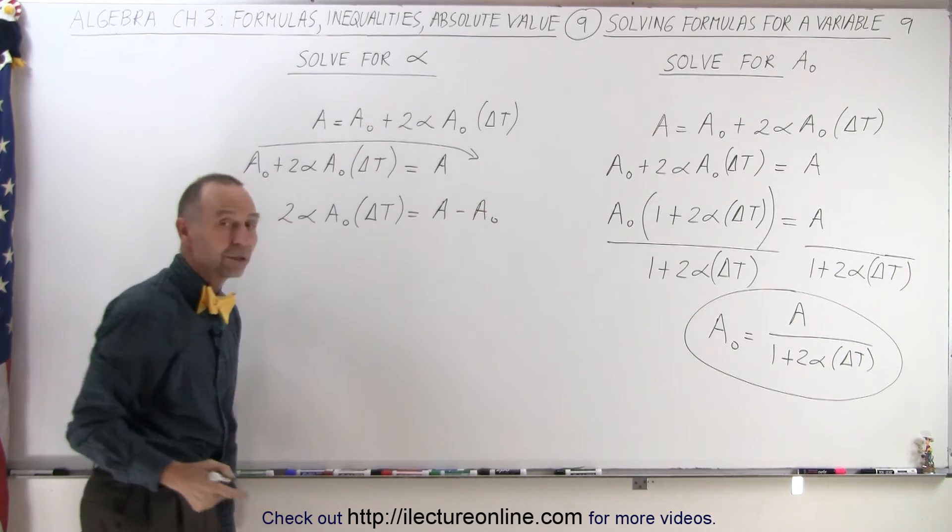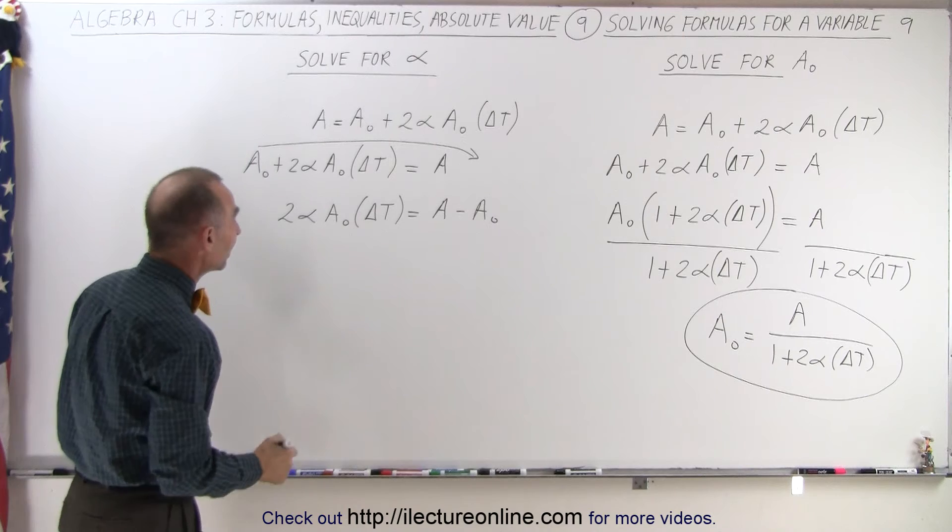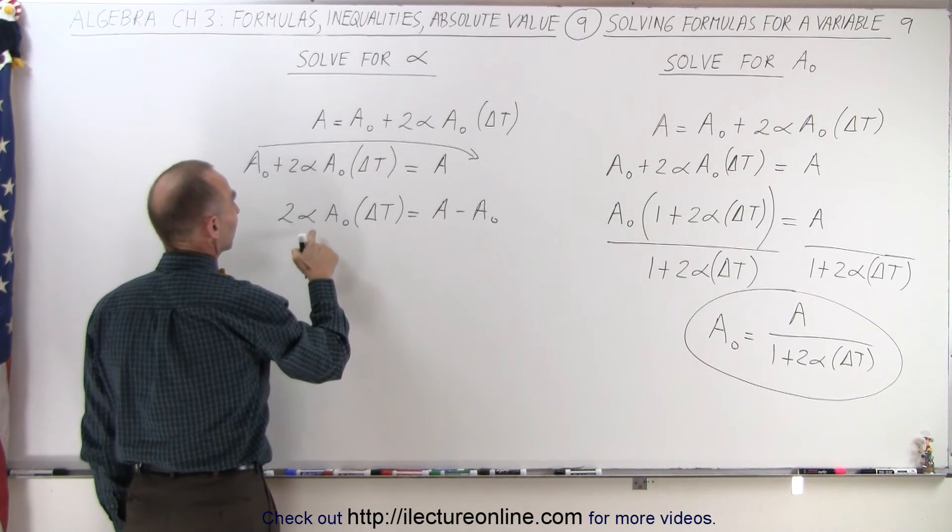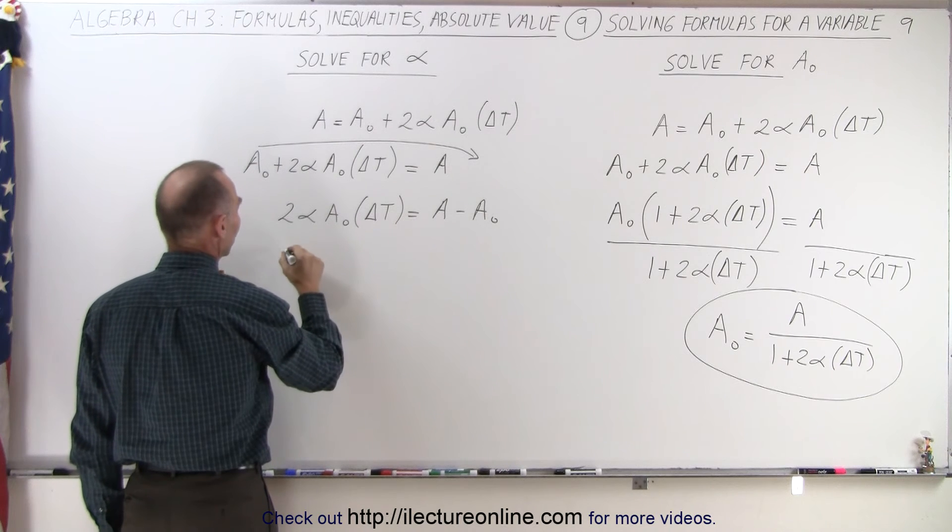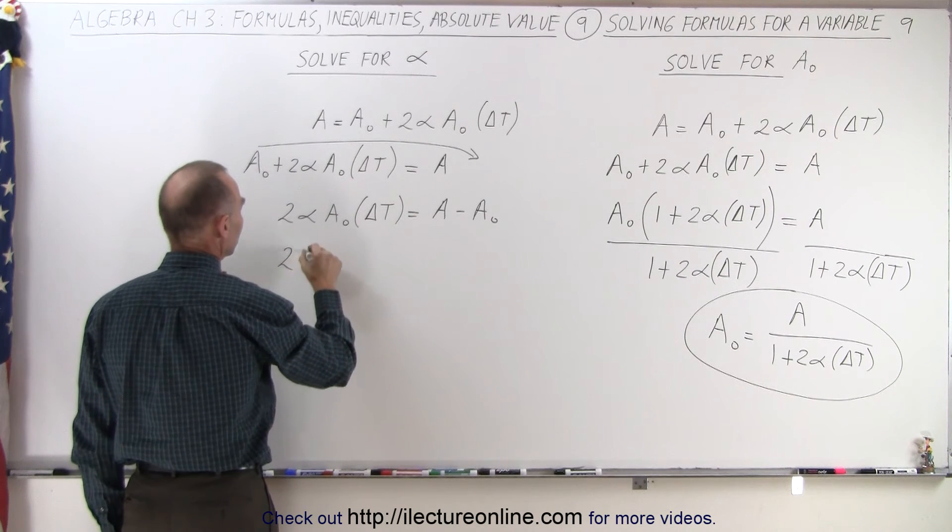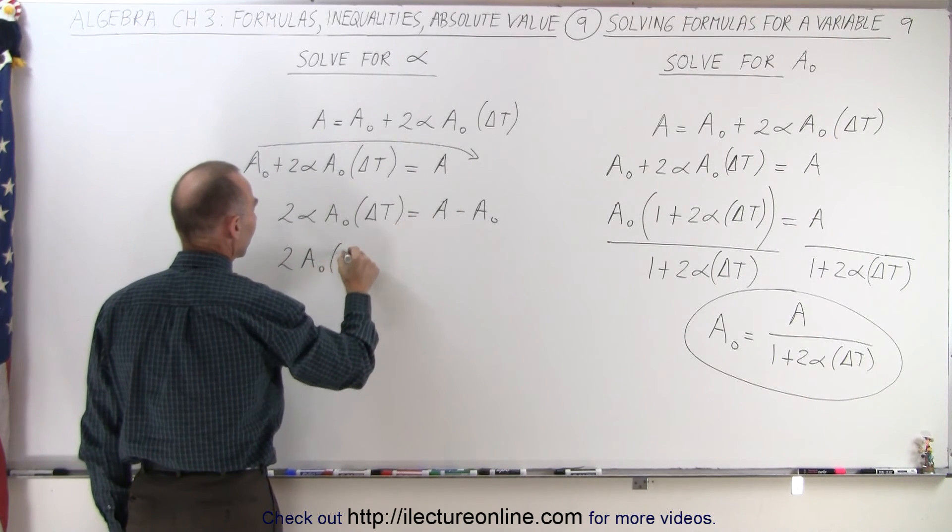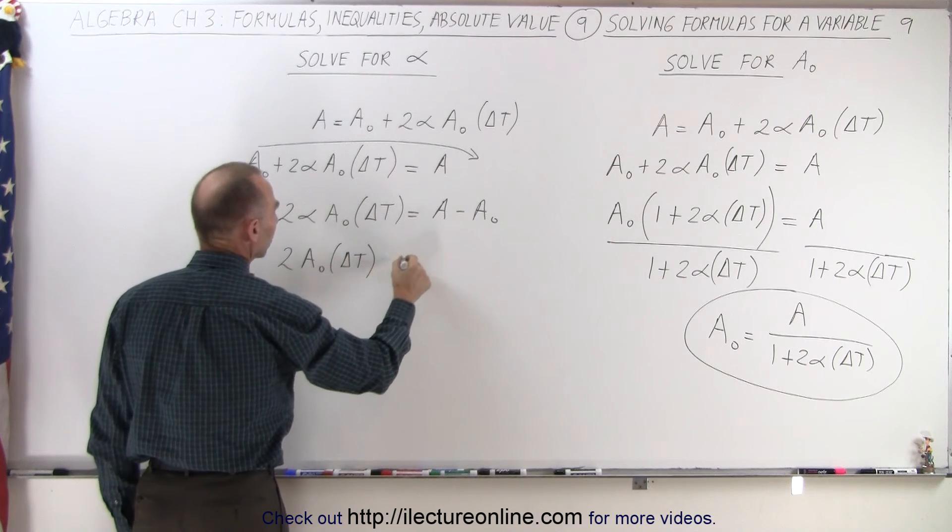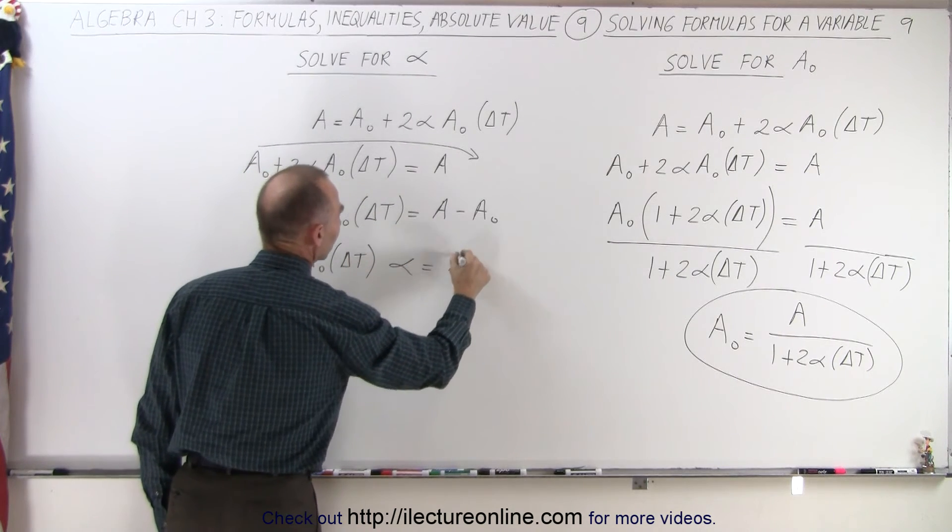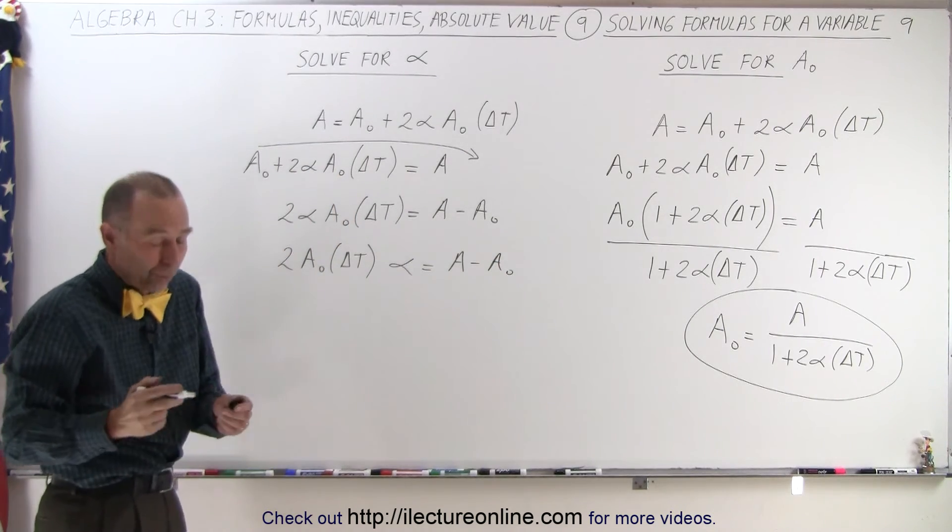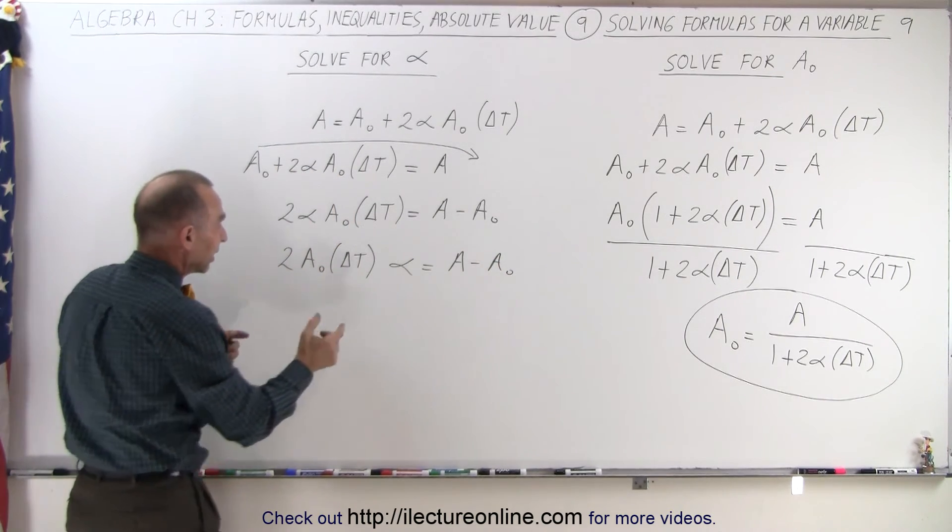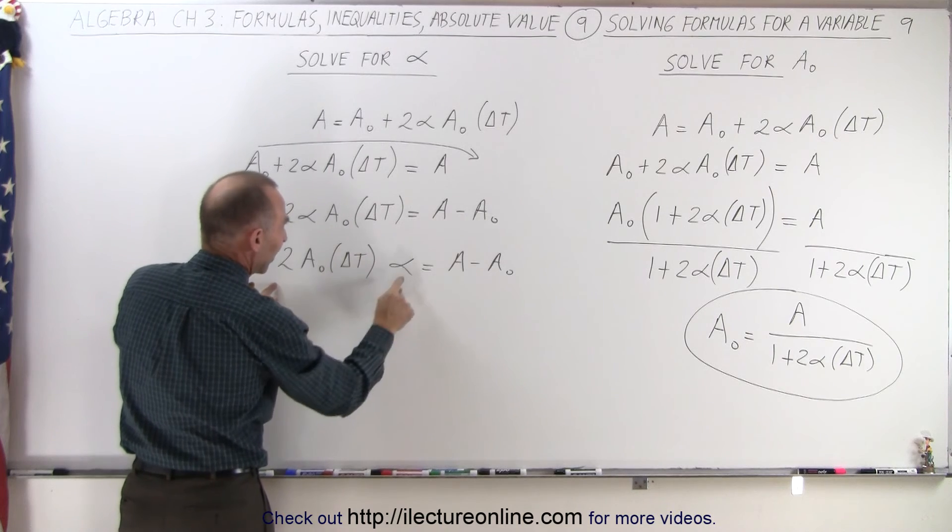It becomes negative because it went across the equal sign. Finally, I have a coefficient or a factor of alpha. It may become easier to see that when I rewrite the left side. 2 A sub nought times delta T all multiplied times alpha is equal to A minus A sub nought. I just did that step. It wasn't really necessary, but it makes it clear that this here is the factor of alpha.